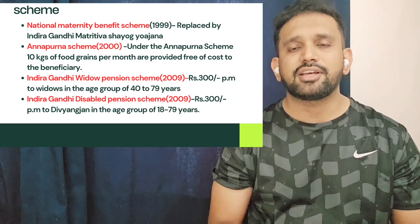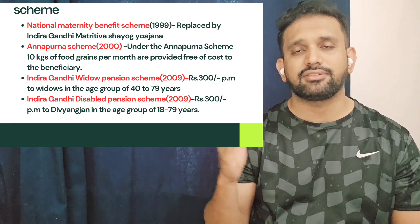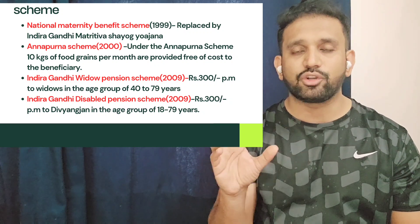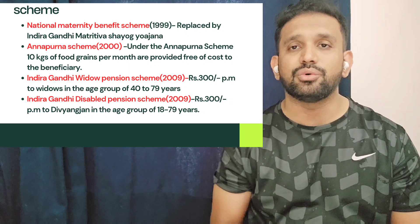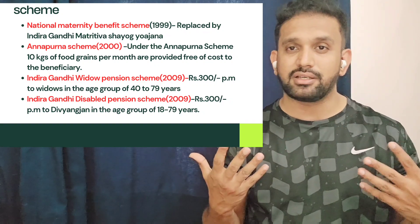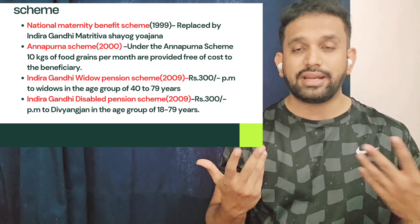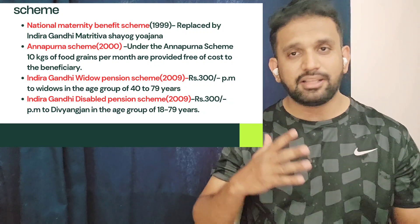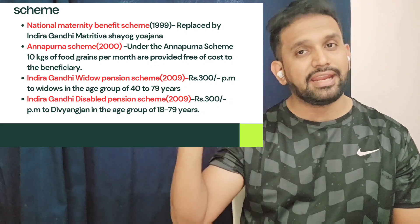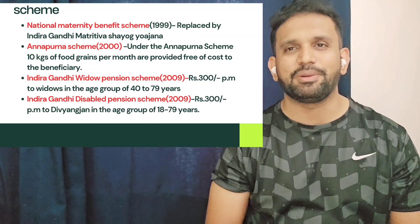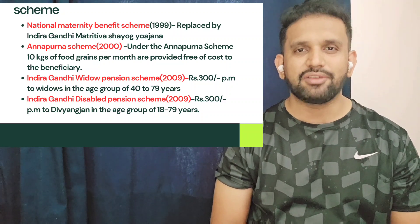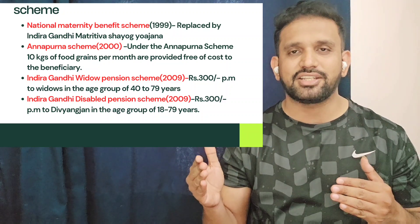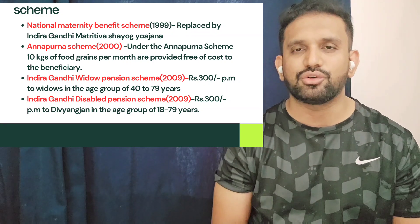A common question is: what happens when a disabled person crosses 80 years of age? At that point, the National Old Age Pension Scheme becomes applicable to them. So whenever anyone crosses 60 or 80 years, the old age pension scheme will come into picture and the relevant amount under that scheme will apply.